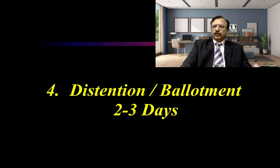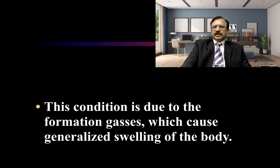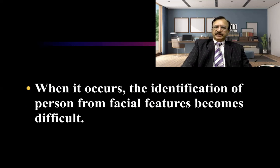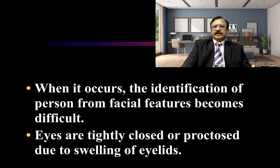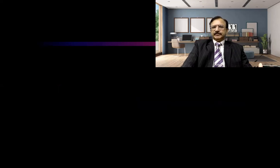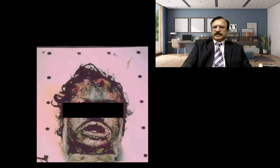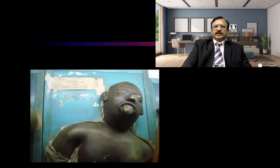Then, the distension and development of the whole body occurs in approximately two to three days. This is also because of the abundant accumulation and formation of the gases, resulting in a generalized swelling of the whole body. Besides development of face and neck, identification of the person becomes more difficult. Eyes are tightly closed or proptosed due to swelling of the eyelids, cheeks are puffy, lips become thick, and the tongue is swollen and protruded.